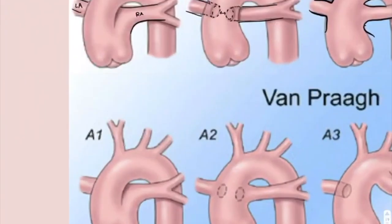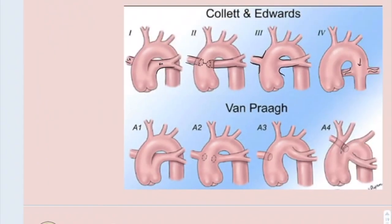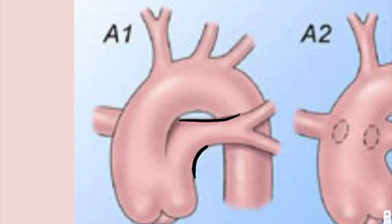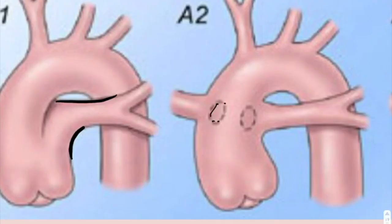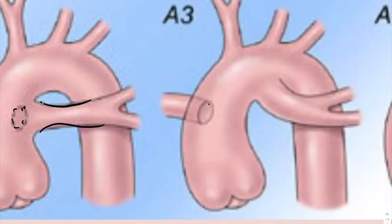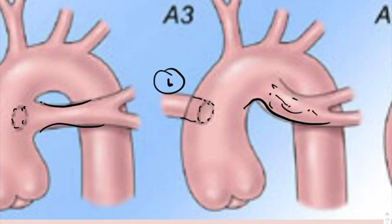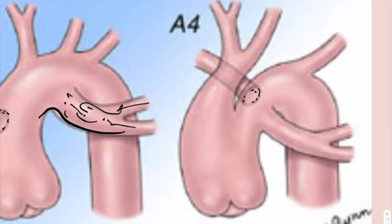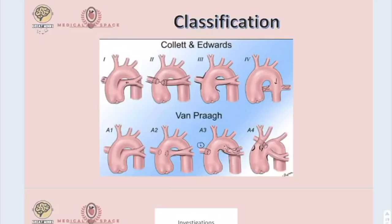The newer classification uses A1, A2, A3, and A4. In A1, the pulmonary artery arises from the truncus. In A2, the right and left pulmonary arteries arise from the posterior side of the truncus. In A3, the left pulmonary artery usually arises from the posterior side of the truncus and the right pulmonary artery arises from collaterals from the truncus. In A4, the truncus is essentially a large pulmonary artery with some coarctation of the aorta.